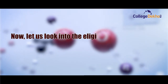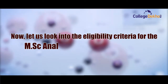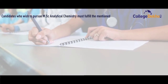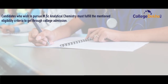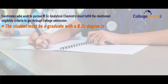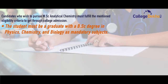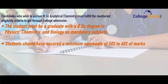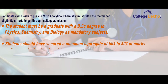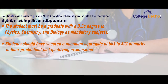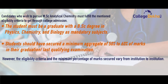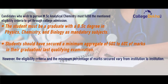Now let us look into the eligibility criteria for MSc Analytical Chemistry course. Candidates who wish to pursue MSc Analytical Chemistry must fulfill the mentioned eligibility criteria to get through college admission. Firstly, the student must be a graduate with a BSc degree in Physics, Chemistry, and Biology as a mandatory subject. Secondly, the student should have secured a minimum aggregate of 50–60% marks in their last qualifying examination or in their graduation.